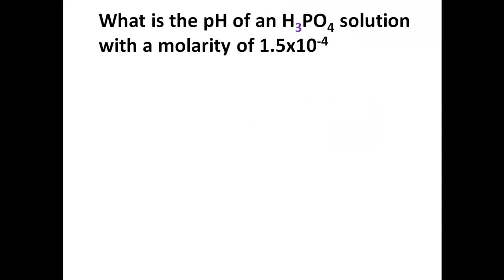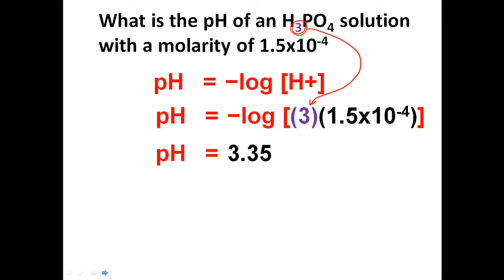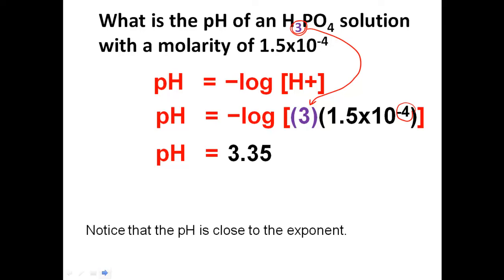Here's another curveball. In this polyprotic acid there's a 3, so I multiply the concentration by 3: 3 × the given concentration of the acid equals the ion concentration in solution. It's those active ions that make the solution more acidic. Last time with 2 ions we got 3.5; now with 3 ions at that concentration, we get a pH of 3.35. Reality check: is it close to the negative exponent of 4? Yes — always a good sanity check.